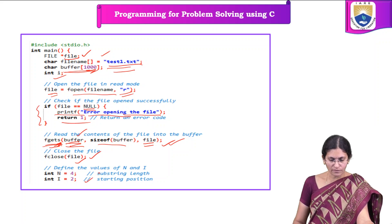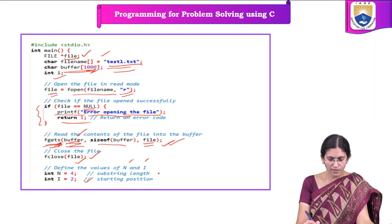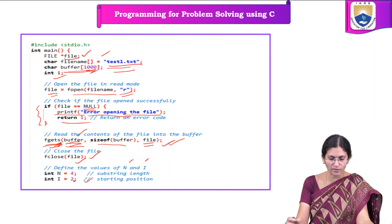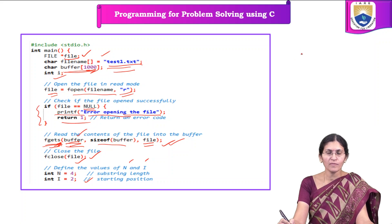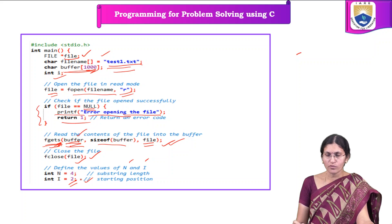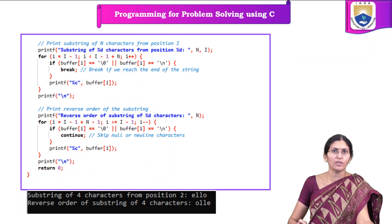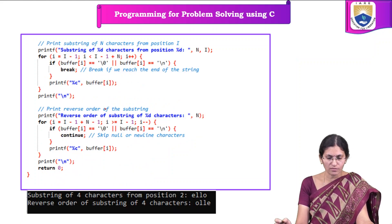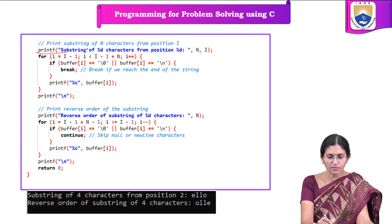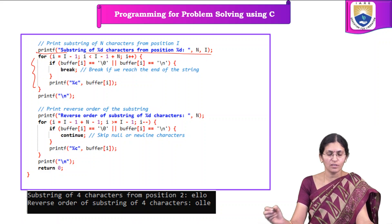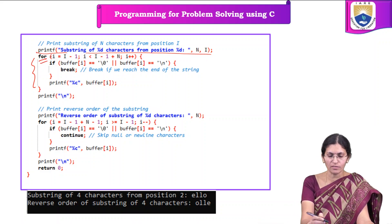Next, we define the values of n and i. In this program, n and i are initialized statically — n is equal to 4 and i is equal to 2. We can also take them dynamically. That means we start reading from the second character and the substring length is 4. Now let us see how we can print the characters on the screen. Using printf, a label statement is printed. Then to print the substring, we use a for loop.